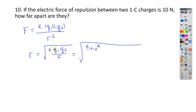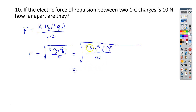Each one of these charges is 1 coulomb, so we're going to say this is 1 coulomb squared, and we're going to divide that by the force, which is 10 newtons. If you plug everything into your calculator, you should end up with 30 kilometers, or 30,000 meters, which is probably what you'll get first.